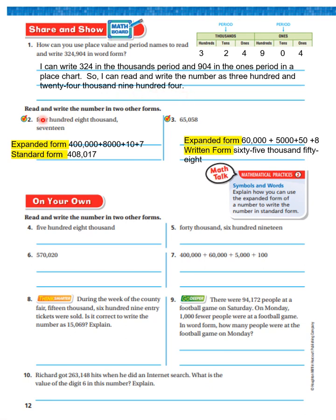It says read and write the number in two other forms. The word form shown is written, so in expanded form: 400,000 plus 8,000 plus 10 plus 7, and in standard form: four hundred eight thousand seventeen. Now this one is in standard form, so in expanded form it would be 600,000 plus 5,000 plus 50 plus 8, and in word form: six hundred five thousand fifty-eight.